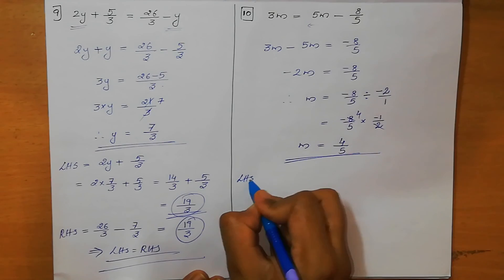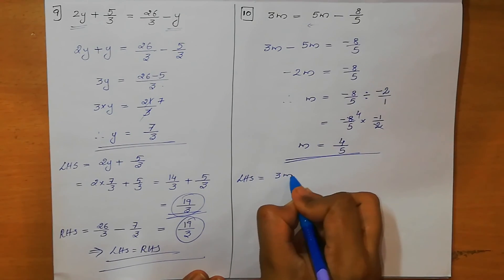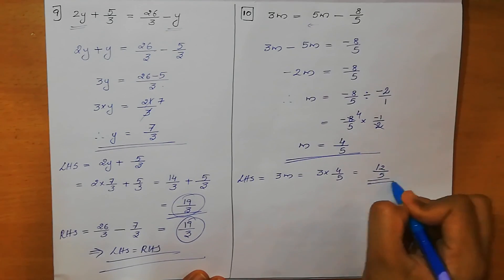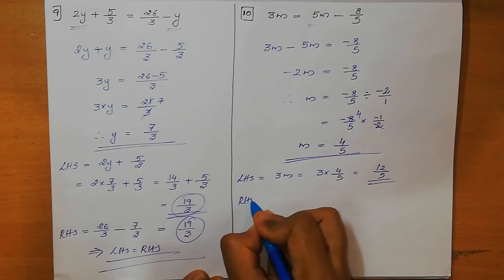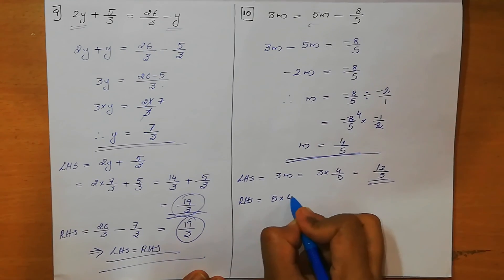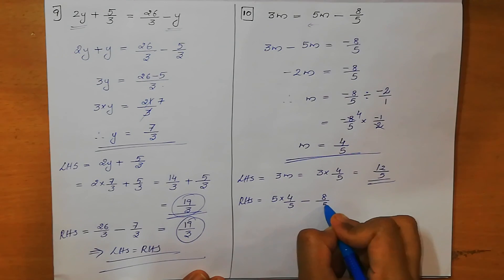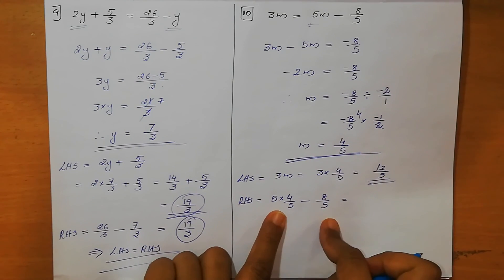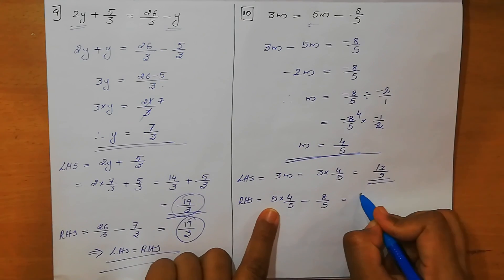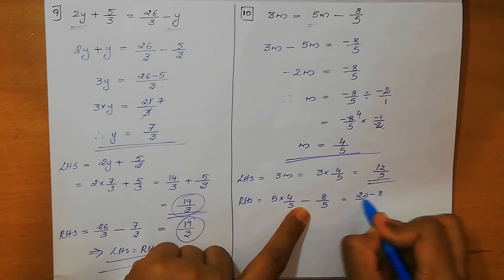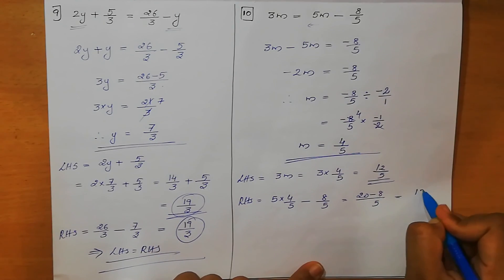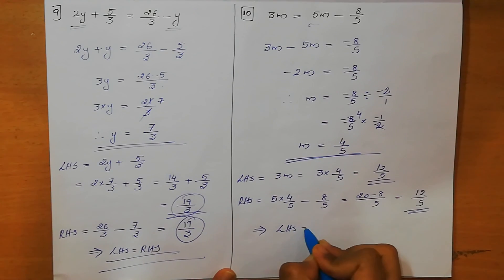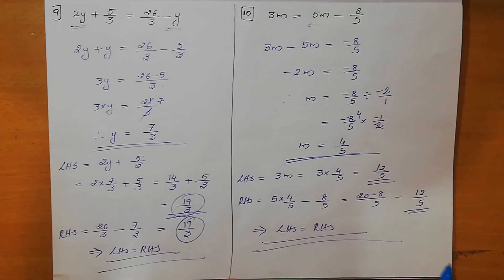We verify: LHS = 3M = 3 × (4/5) = 12/5. RHS = 5M minus 8/5 = 5 × (4/5) minus 8/5 = 20/5 minus 8/5 = 12/5. LHS = RHS = 12/5. Hence verified.